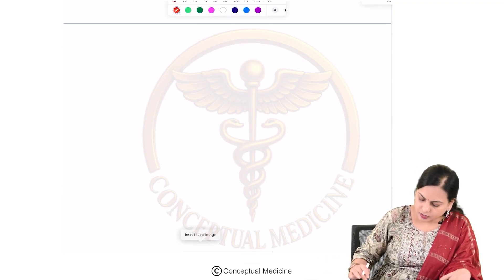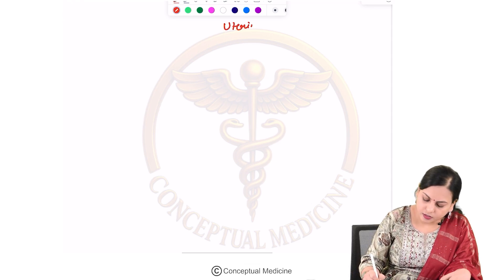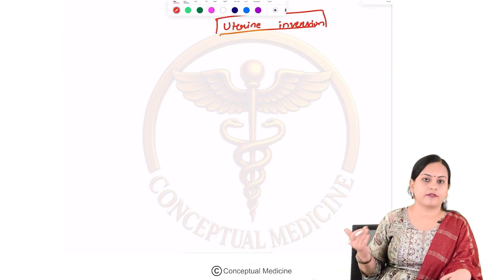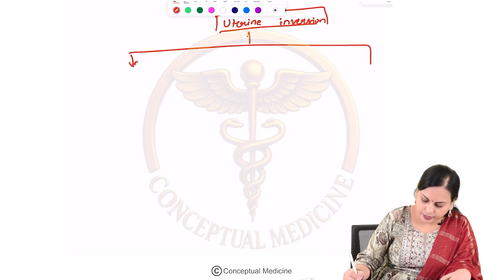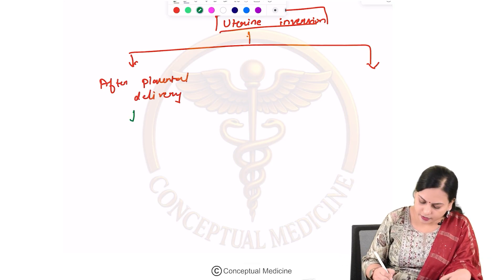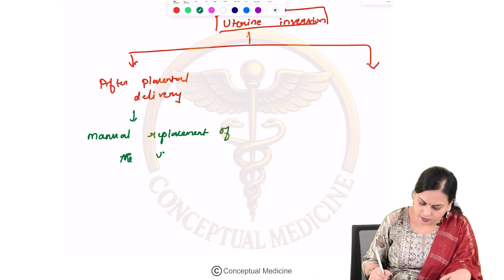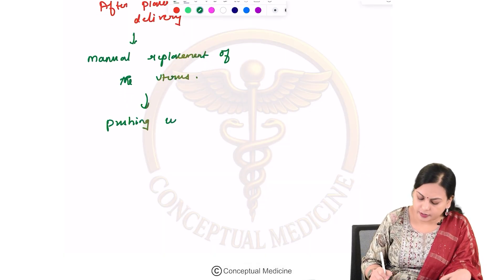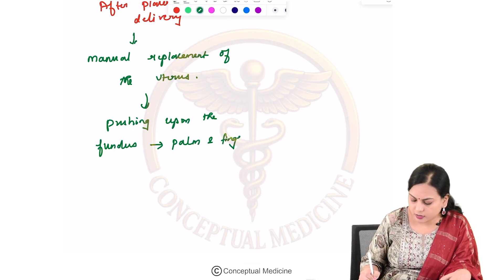Uterine inversion can happen with placental attachment or without — that is, before or after delivery of the placenta. When it happens after placental delivery, we can attempt a manual replacement of the uterus by pushing on the fundus using the palm and fingers along the long axis of the vagina.